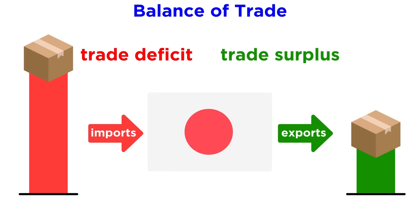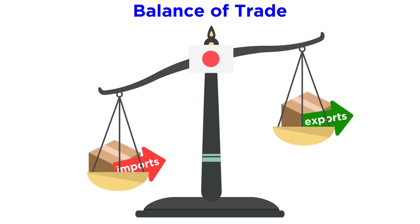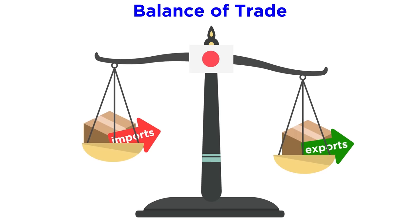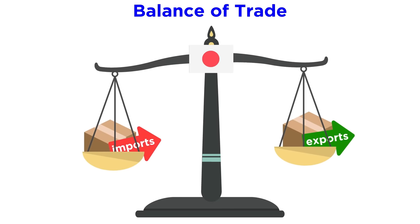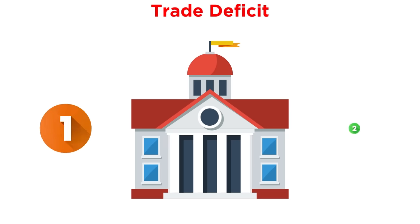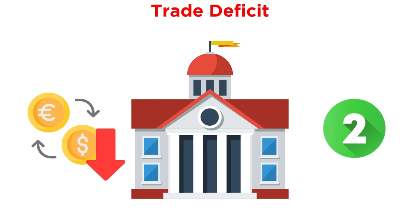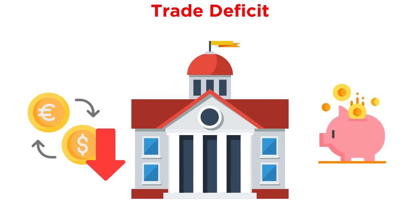Trade surpluses and trade deficits are not inherently bad. However, generally countries strive for some sort of trade balance in order to protect the value of their currencies. In other words, they hope the value of imports is approximately equal to the value of exports. If a country does have a trade deficit, its government can try to restore trade balance in two main ways: first, it can attempt to depreciate the exchange rate of its currency; second, it can attempt to cut back spending by adjusting its monetary or fiscal policy.